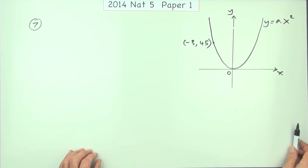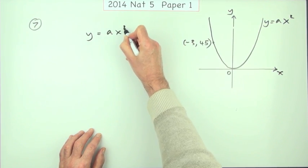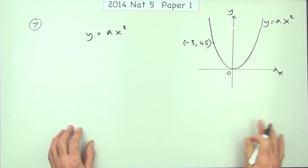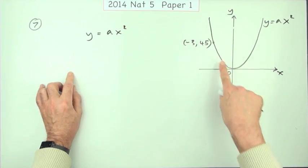Well, it's a standard technique. You've got an equation. The equation of that curve is y equals ax squared. That's an equation that must be true for every point that belongs on it.